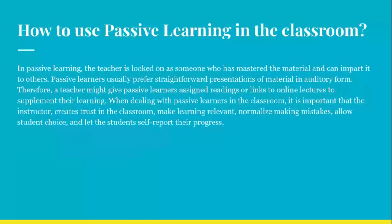Moving on to how to use passive learning in the classroom. In passive learning, the teacher is looked on as someone who has mastered the material and can impart it to others. Passive learners usually prefer straightforward presentations of material in an auditory form. Therefore, a teacher might give passive learners assigned readings or links to online lectures to supplement their learning. When dealing with passive learners in the classroom, it is important that the instructor creates trust, makes learning relevant, and normalizes making mistakes. This allows student choice and lets the student self-report their own progress.